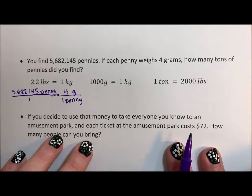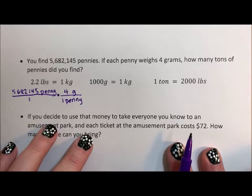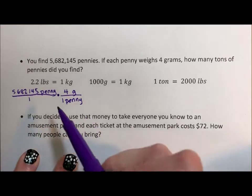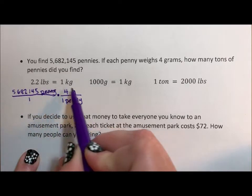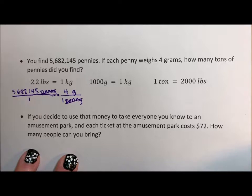In fractions, when you're multiplying or dividing, if the number in the numerator and denominator is the same, you can cancel — divide them out. The same thing works for labels. The fact that penny appears in the numerator and denominator and it's the same label means they can also, like numbers, cancel. So if I multiply 5,682,145 by 4, I find out how many grams of weight I'm holding.